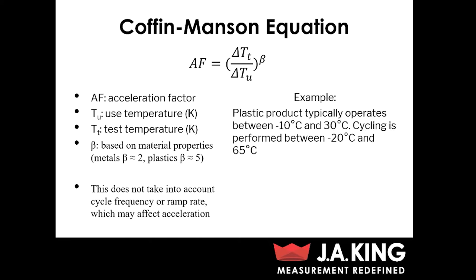Let's go through an example. You've got a plastic product that typically operates between negative 10 degrees and 30 degrees Celsius, and you want to accelerate that, so we're going to choose cycling between negative 20 degrees and 65 degrees Celsius. Since it's a plastic product, we're going to assume a beta value of five, and in this case we come up with an acceleration factor of 43.